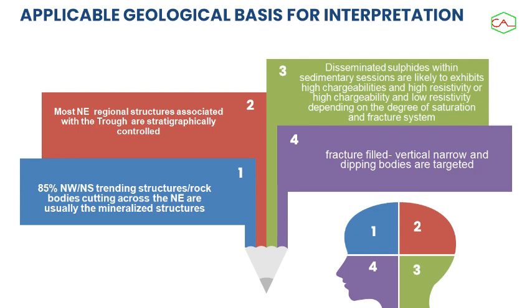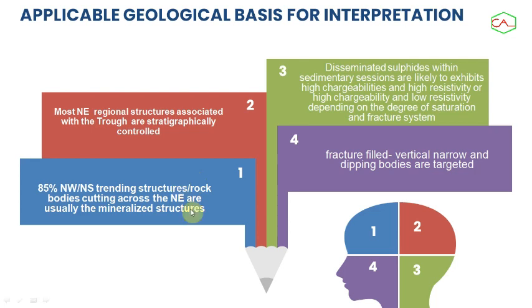In this area, what we've tried to understand geologically is first of all the structural delineation — the structural system, the trending, and how it goes, like the cuts and faults. Secondly, we've tried to look at the regional structure associated with the trough. We know that the regional structures in this trough are mostly stratigraphically controlled, so you have to understand when they are stratigraphically controlled and when they are locally controlled based on your interpretation. Having these two principles, we'll be able to define the kinds of structures we are looking for in terms of their directions.